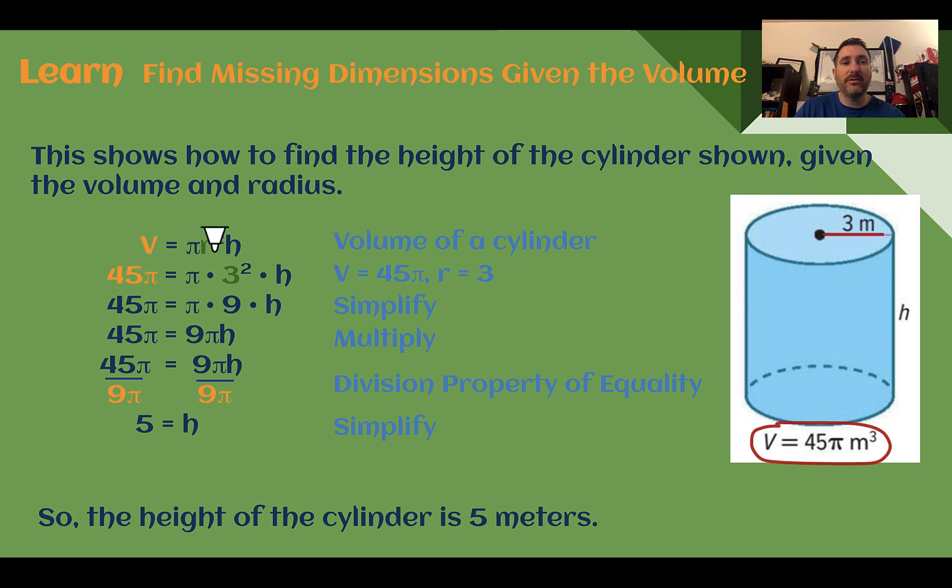So we're going to substitute in what we know. Volume was 45π. The radius was 3. We can simplify out the radius squared to make it 9. So 45π is equal to π times 9 times whatever the height is.